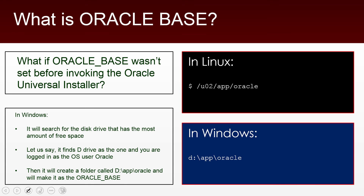In Windows, what will happen is the installer will search for the disk drive that has the most amount of free space. For example, if the D drive has the most free space, it will create a folder called D:/app/oracle — which is again the OS username — and will treat that as the Oracle Base. That is how Oracle Base works when you do not configure it before using the Oracle Universal Installer.